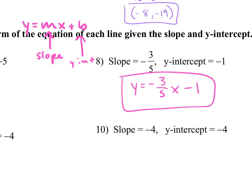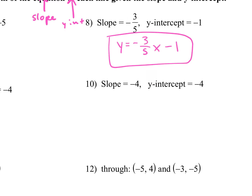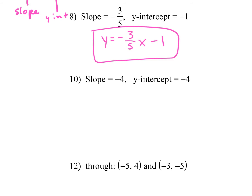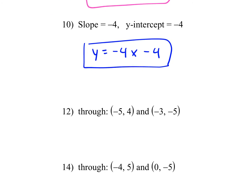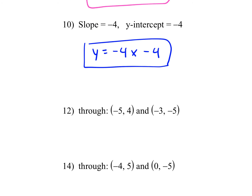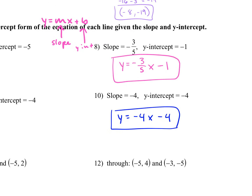Any questions here? Number 10. Y equals negative 4x minus 4. So that's it for those. Any questions? All you're doing is plugging in the slope and the y-intercept.